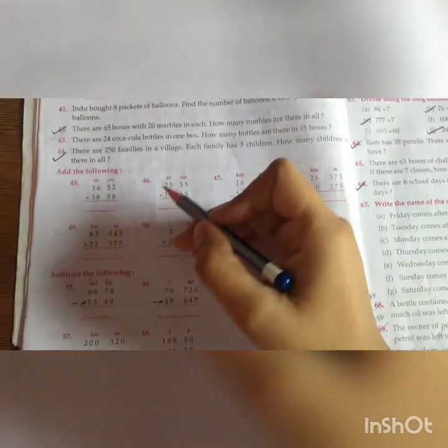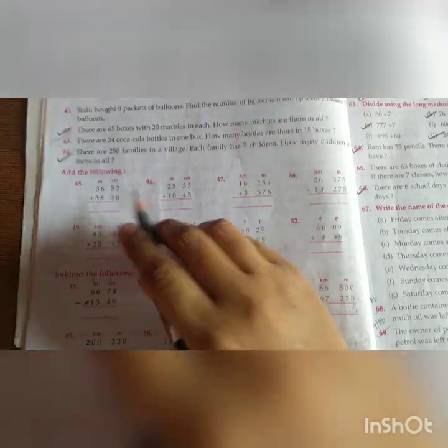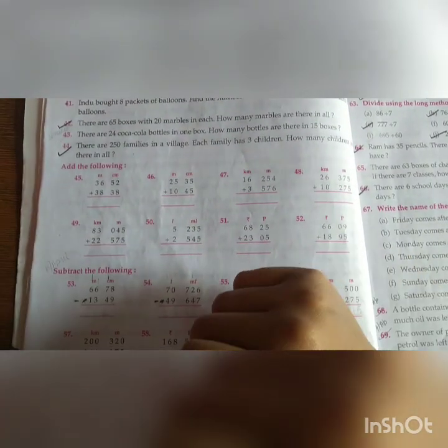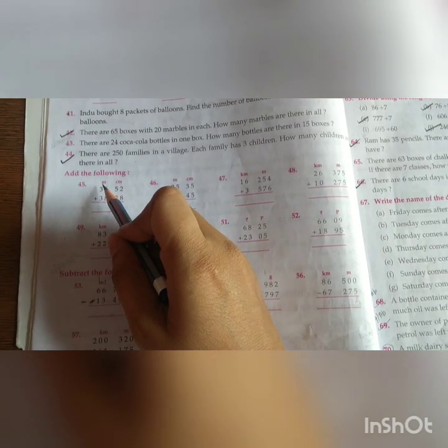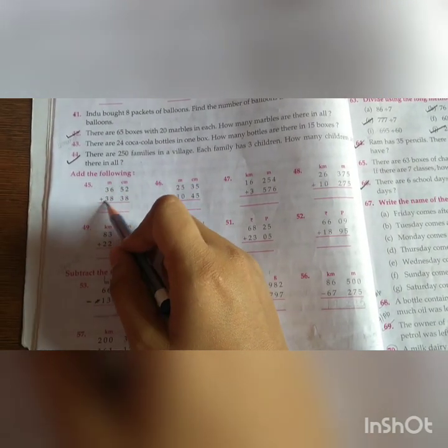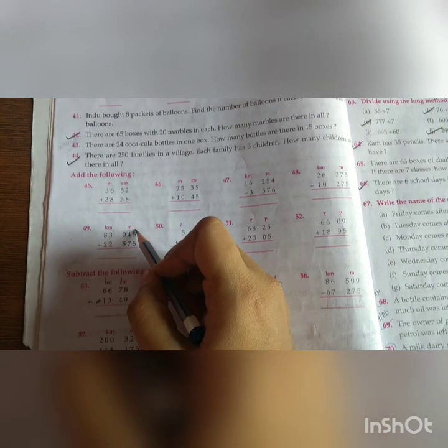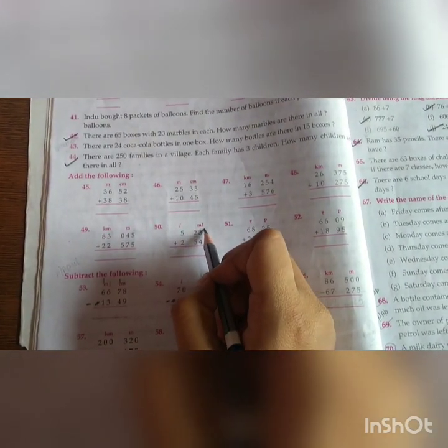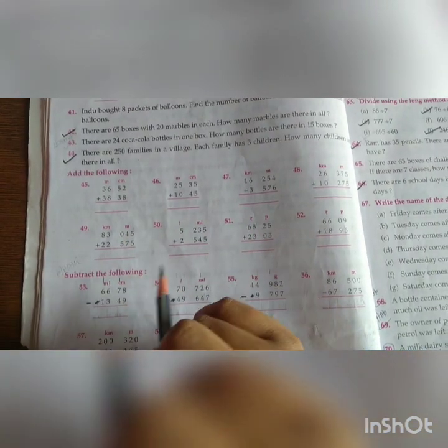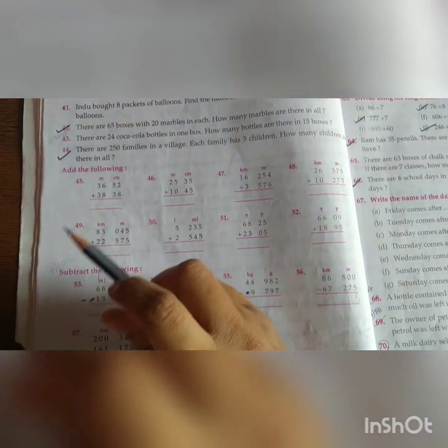Now let's start addition. I will tell you one question and rest of the questions you have to do yourself. If you will see carefully, here meters and centimeters, two columns are given. Kilometers and meters, meters and centimeters, liters and milliliters. These are all units of measurement.